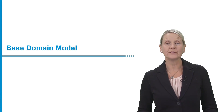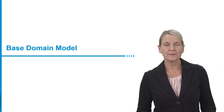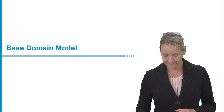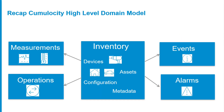Let's start with the base domain model. As mentioned, it's a little bit of a recap of what you have learned in the basic part of the Essentials course. Let's have a look at the Cumulocity hierarchy or structure, which gives us information on how devices are linked to Cumulocity from a communication point of view. This slide shows you the relevant aspects of a device and an asset and how measurements, events, and alarms are assigned to a device.